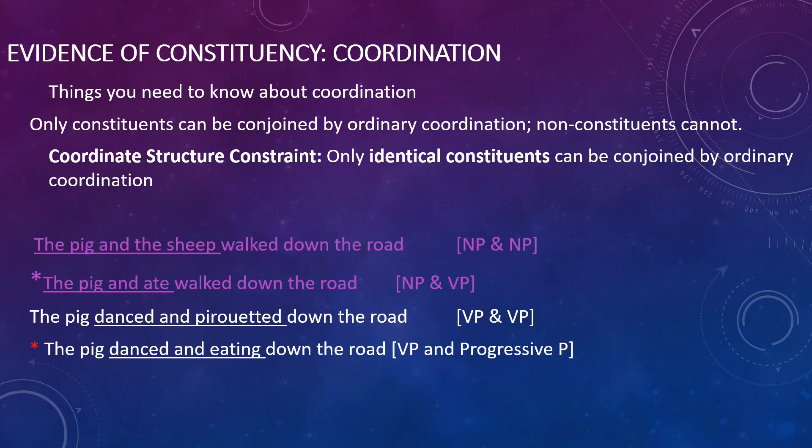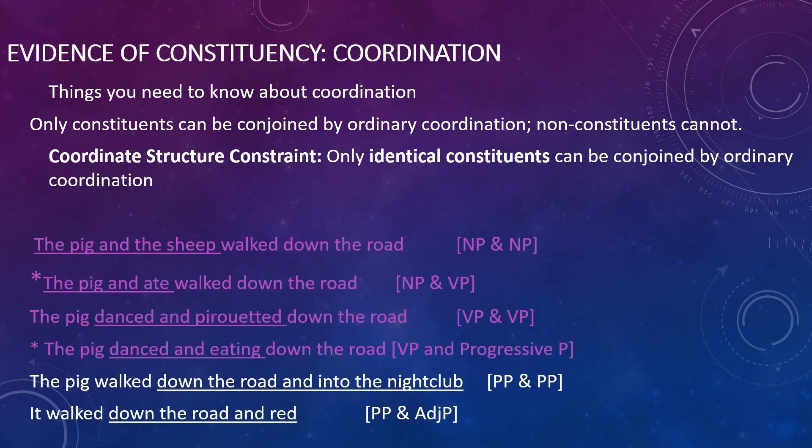The way you can use coordination to test if something is a constituent is to try to coordinate it with another constituent that you do know about. So if you have a noun phrase like 'the pig,' you can try to coordinate it with a noun phrase you know, such as 'the sheep.' And if you can coordinate it, then these must be constituents. If you can't coordinate it, they probably aren't.